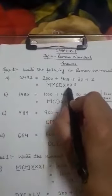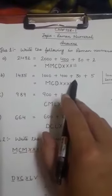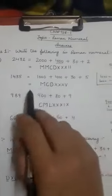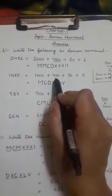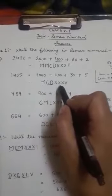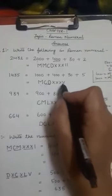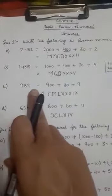Next, 1435. First I will expand. You know how to expand a number. 1000 plus 400 plus 30 plus 5. Now for 1000 I have M. Again for 400 I have CD. 30, XXX and for 5 we have symbol V.